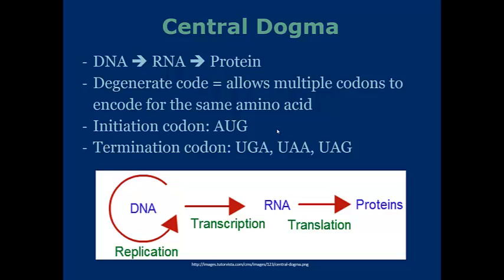Take note that you don't have to have those memorized, though. What you do need to have memorized are the initiation codon, which is AUG, and the termination codons, which are listed as UGA, UAA, and UAG.